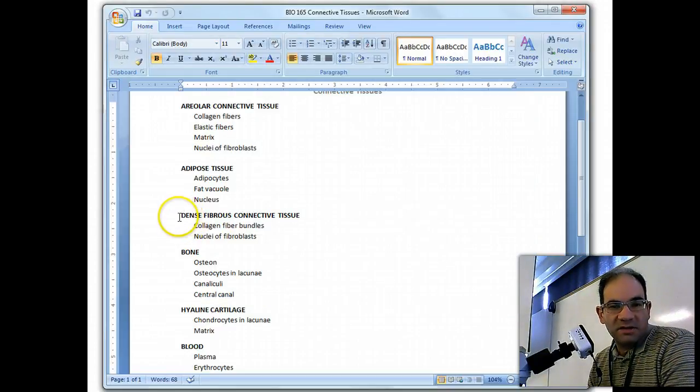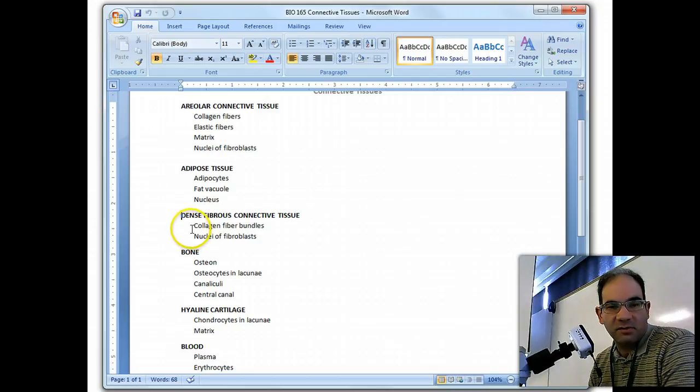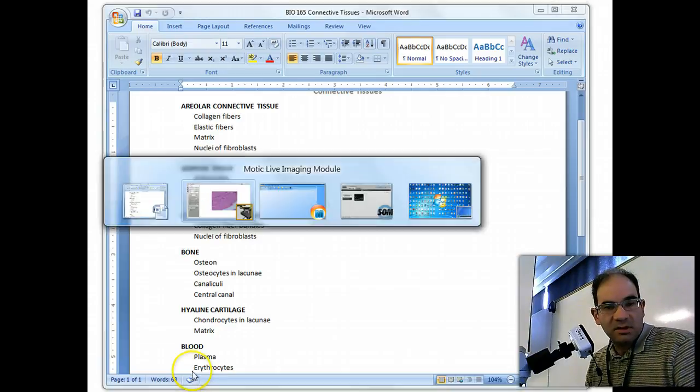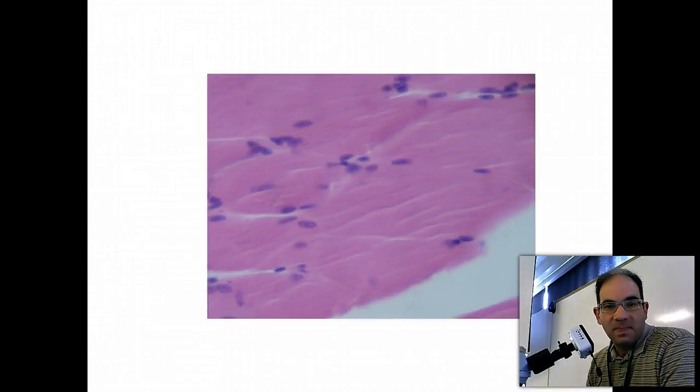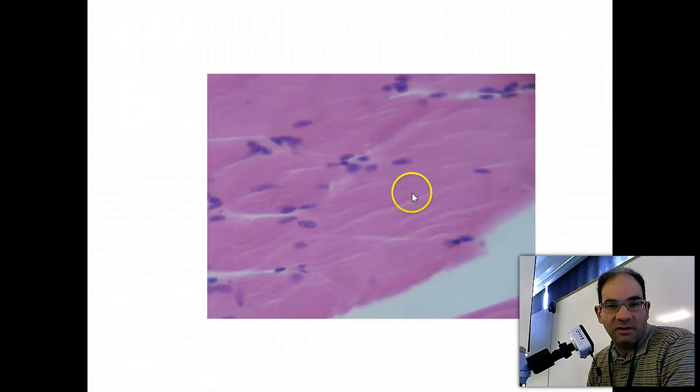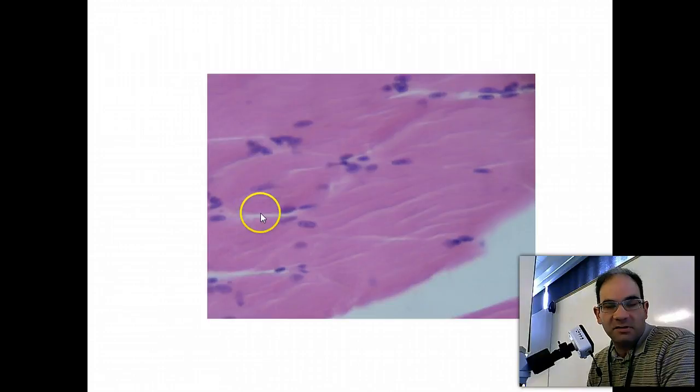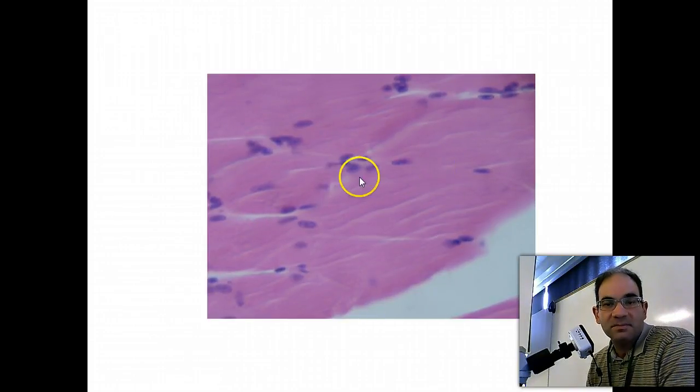Our next tissue type is dense fibrous connective tissue, and you're responsible for collagen fiber bundles and nuclei of the fibroblasts. So here we are at 400x, and you can see this is very parallel. And so this little white space in here, this is all just open space between the fibers. Think of this like a little strand of thread. And these dark staining structures are the nuclei of the fibroblasts, and these little bundles are the collagen fiber bundles.